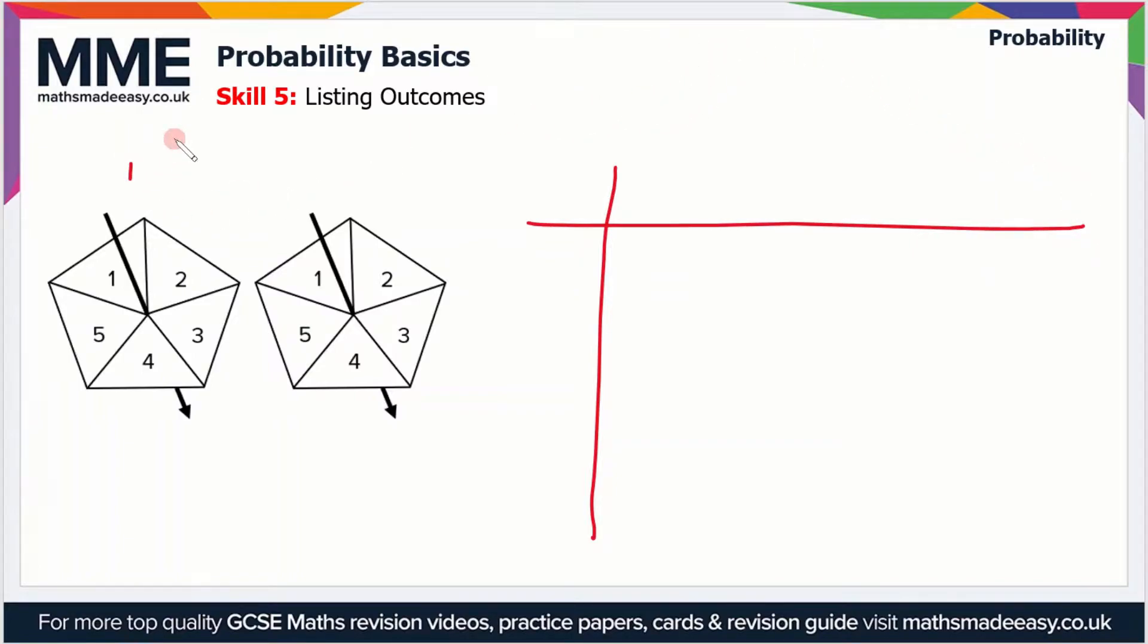Let's say that's the one on the left, and the one on the right is Spinner 2. I can have either 1, 2, 3, 4, or 5 for each one, so we can put them as the headings. So 1, 2, 3, 4, and 5 along the top, and the same down the other side: 1, 2, 3, 4, and 5.